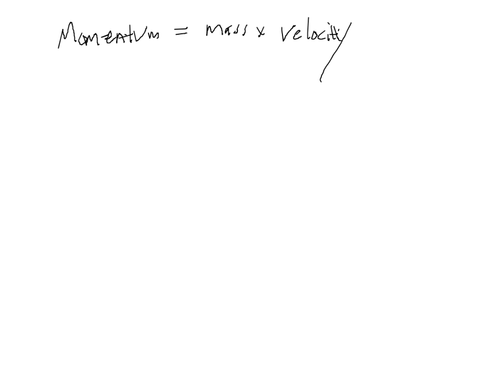In equation form, we write a lowercase p equals m times v, where both velocity and momentum are vectors.